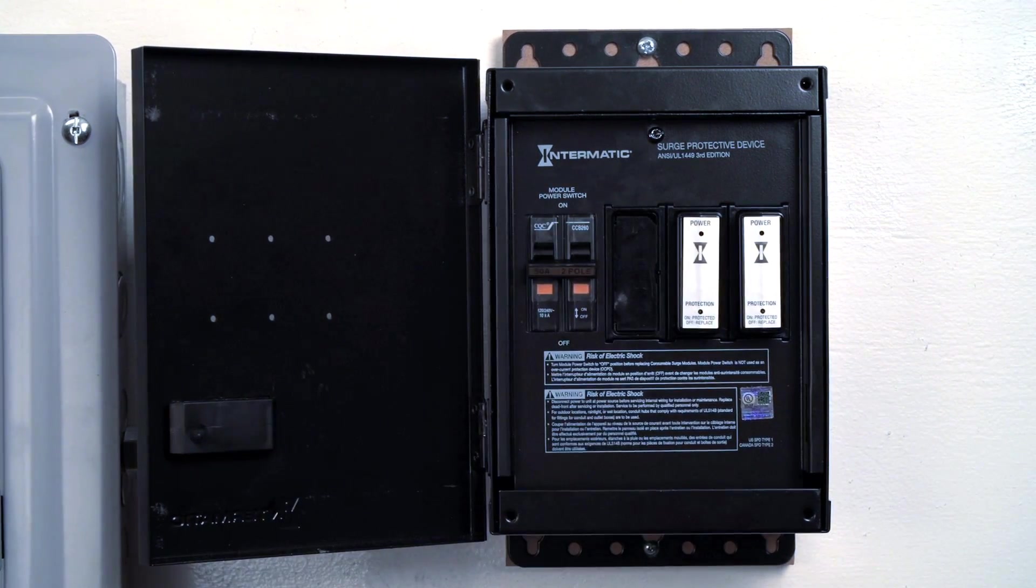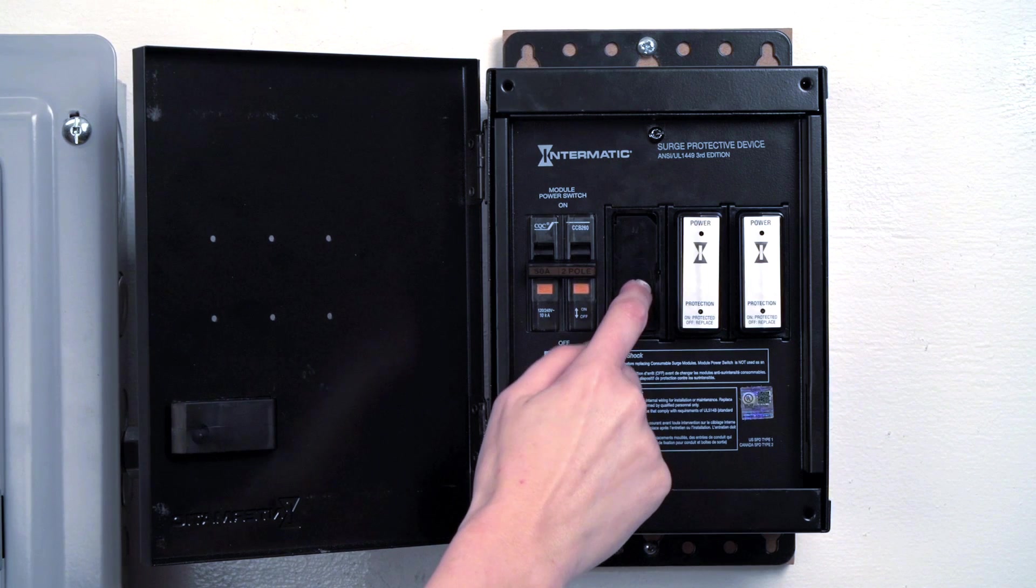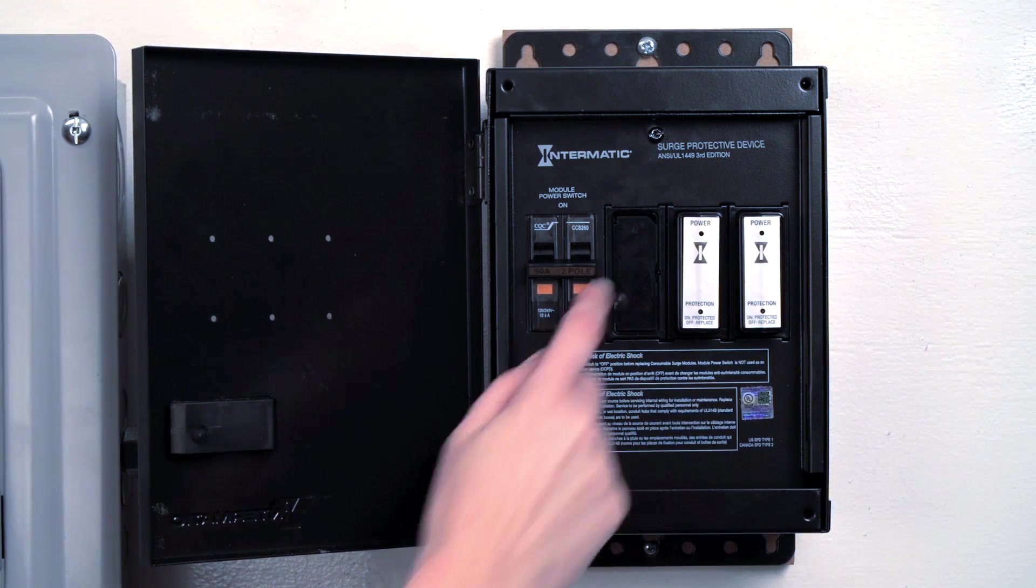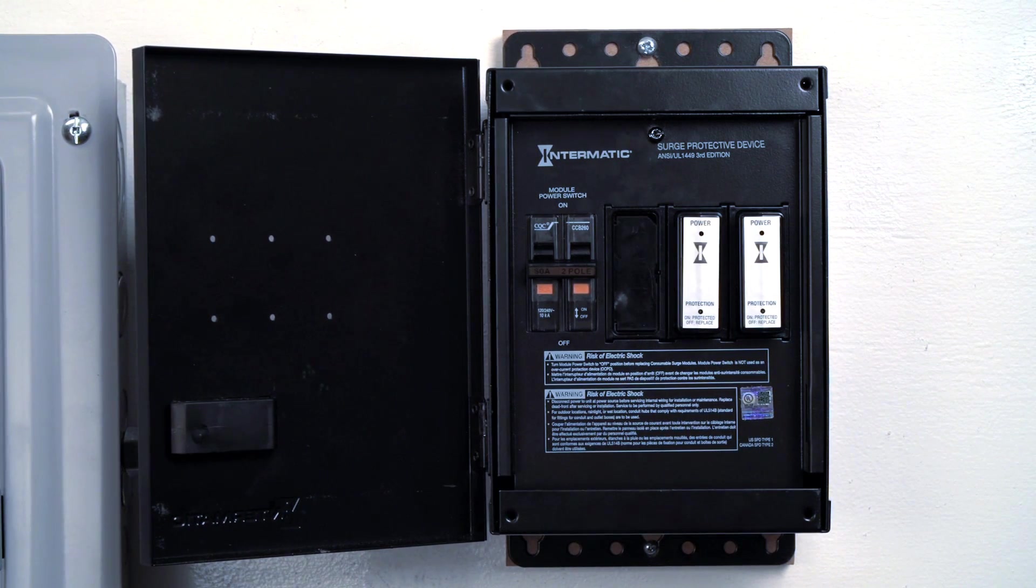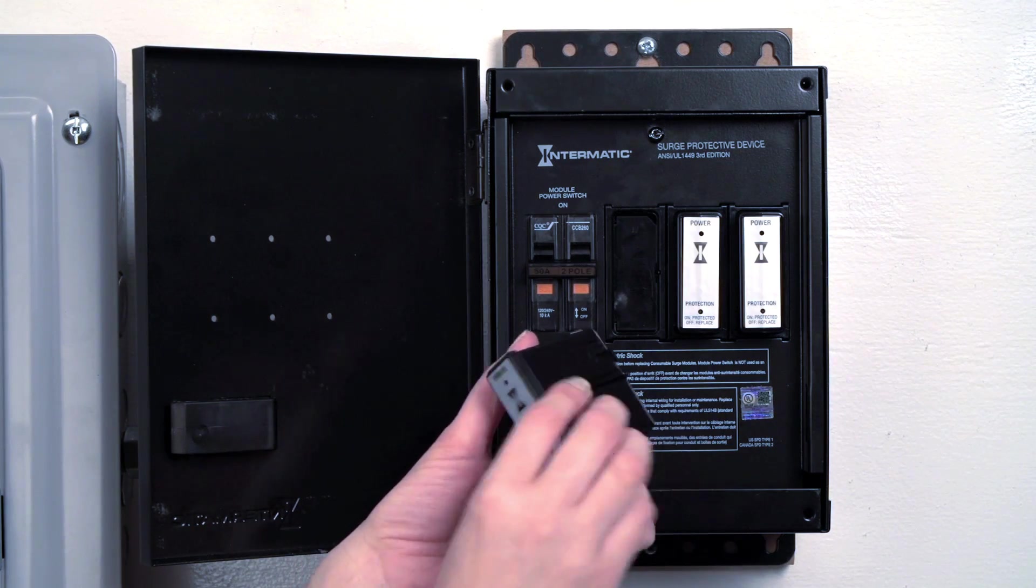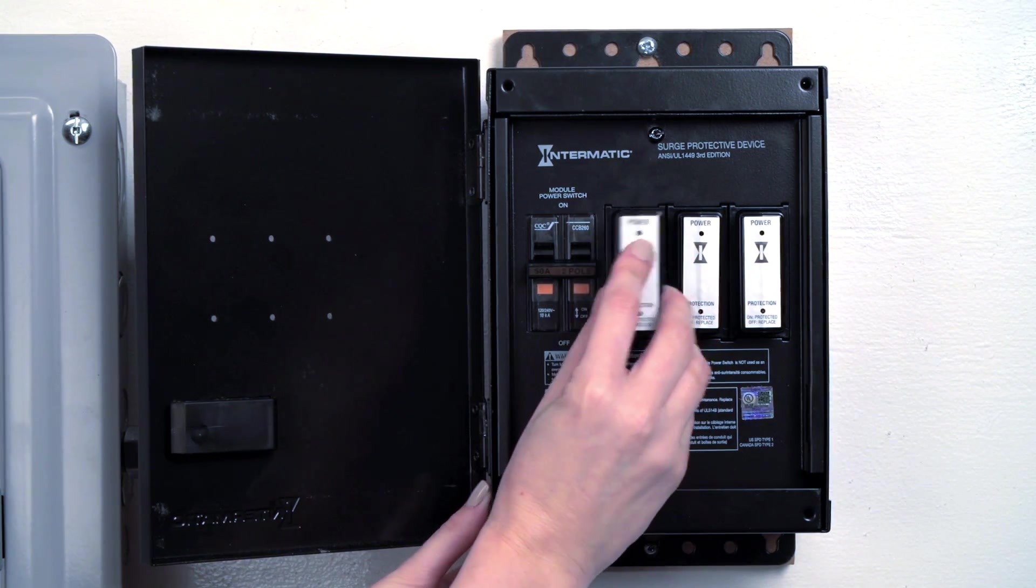Remove the affected module. You'll notice that the doors are tamper proof. Replace the module with a new one, aligning the key with the module base so that it fits properly.